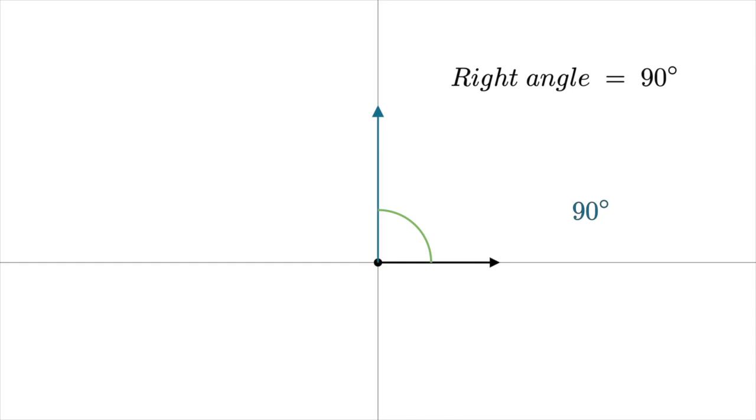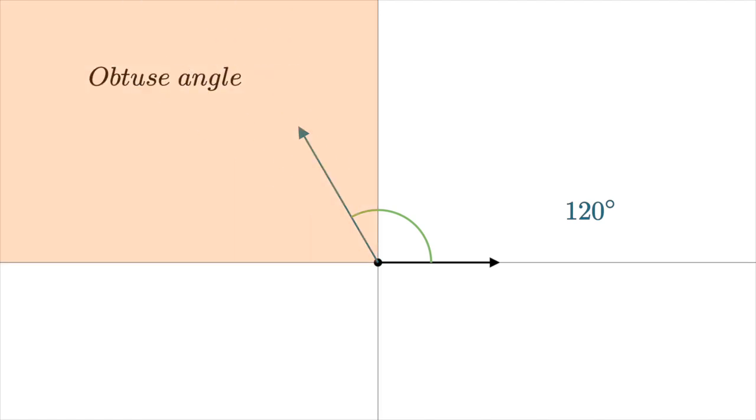Notice that this angle is a quarter of a complete rotation. Turning the blue arrow a bit more, we get 120 degrees. This is called an obtuse angle because all angles that lie within this quadrant are obtuse angles. If we rotate more until the arrow hits the horizontal line, we get 180 degrees. This is called a straight angle because now the blue direction and the reference direction make a straight line.